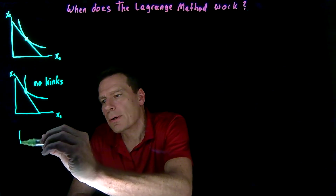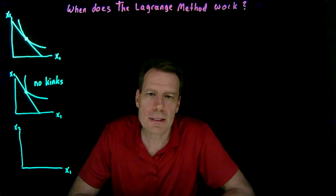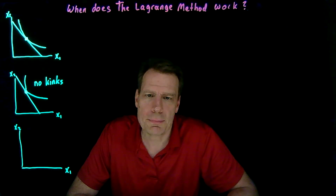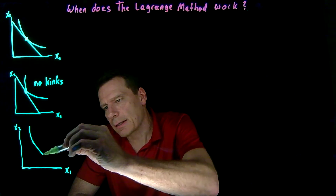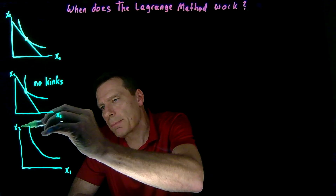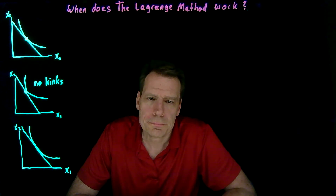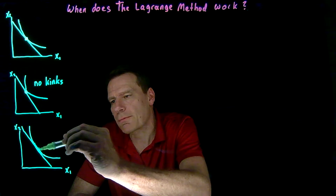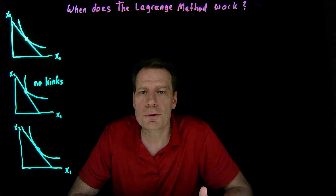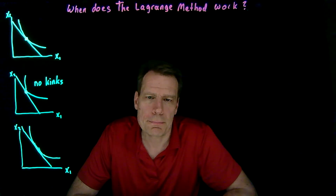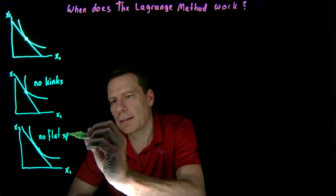Another example would be the case where there are flat spots in the indifference curve. Perfect substitutes would be an extreme example of that, where the entire indifference curve is a flat spot. But there might be less extreme cases — you might have an indifference curve that just has a flat spot, and it could be that there is a budget line that crosses that flat spot. All of those consumption bundles on that flat spot would be optimal, but it's not a unique tangency. The Lagrange method looks for unique tangencies and therefore would not be able to pick this up. So we're going to have to assume no flat spots in our indifference curves.